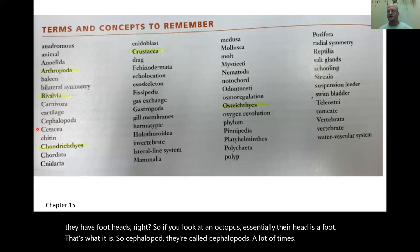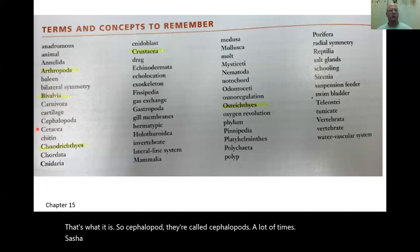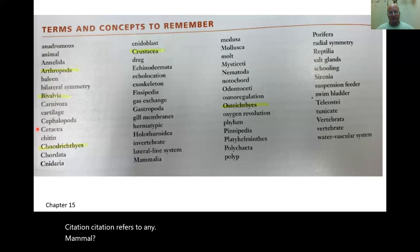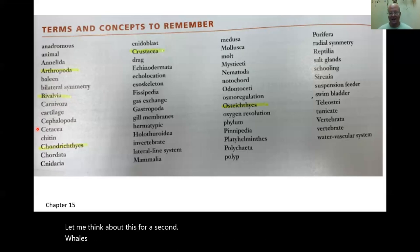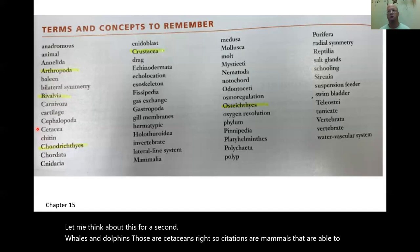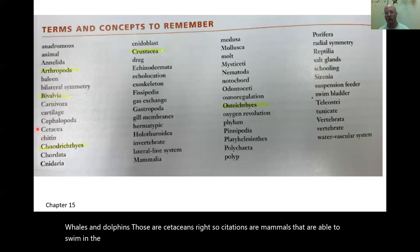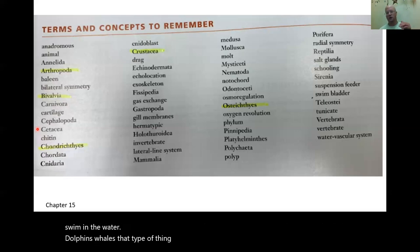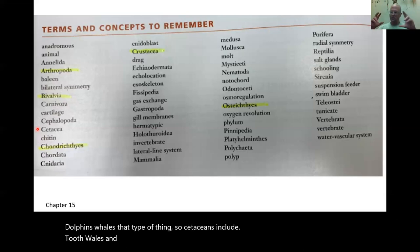Cetacea refers to mammals like whales and dolphins — cetaceans. They are mammals able to swim in the water. Cetaceans include both toothed whales and baleen whales.